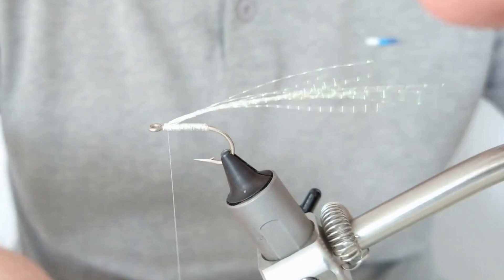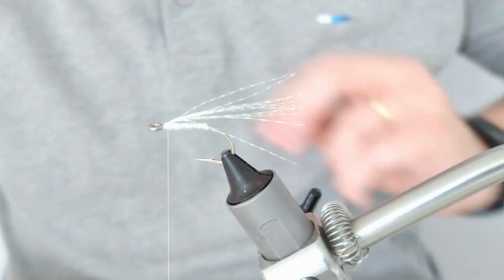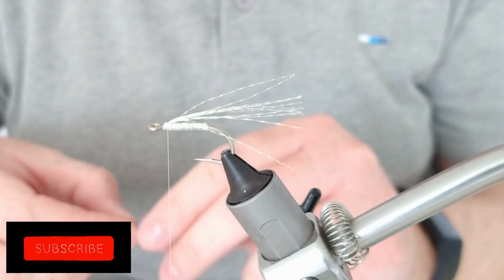And that's going to act as an underwing, because the underwing is pearl crystal flash. I'm just going to cut it off a bit here. It's not tapered; Peter didn't taper, so I'm not tapering it.